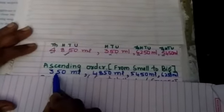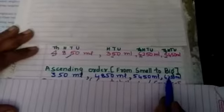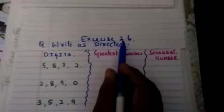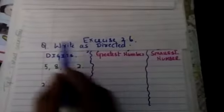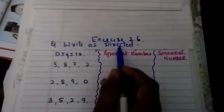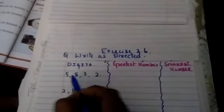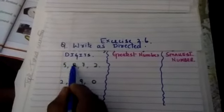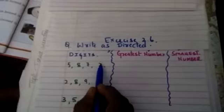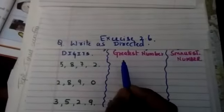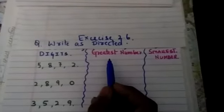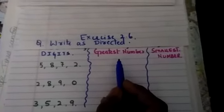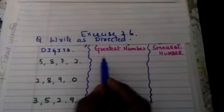Now how to arrange them from smaller to bigger. Exercise 2.6, write as directed. See here some digits are given: 5, 8, 7, 2. See, as you are in the fourth standard, you should make or always you should learn four digit numbers.